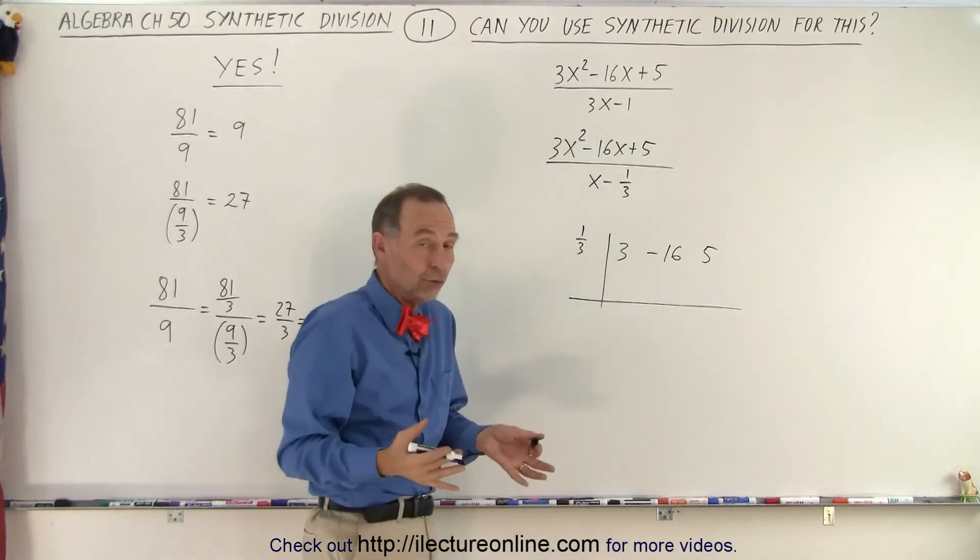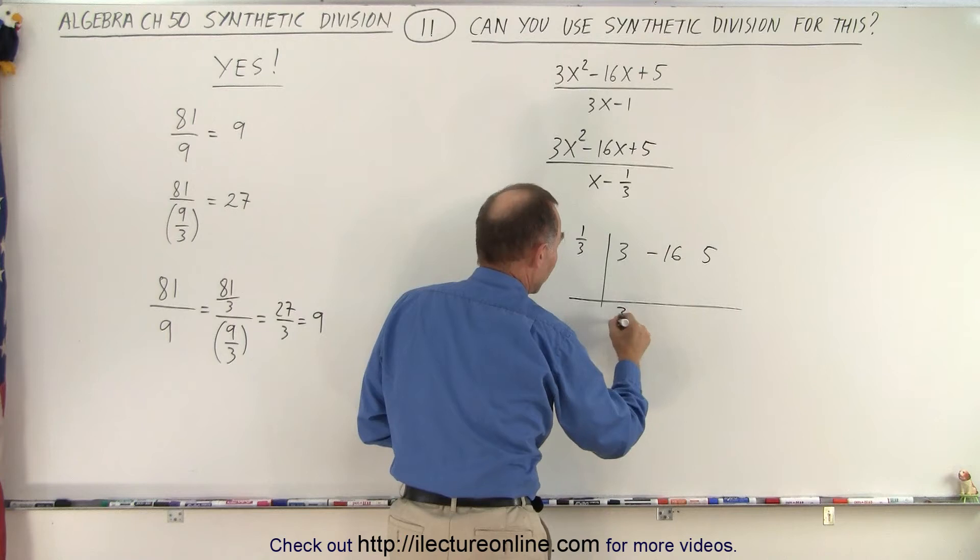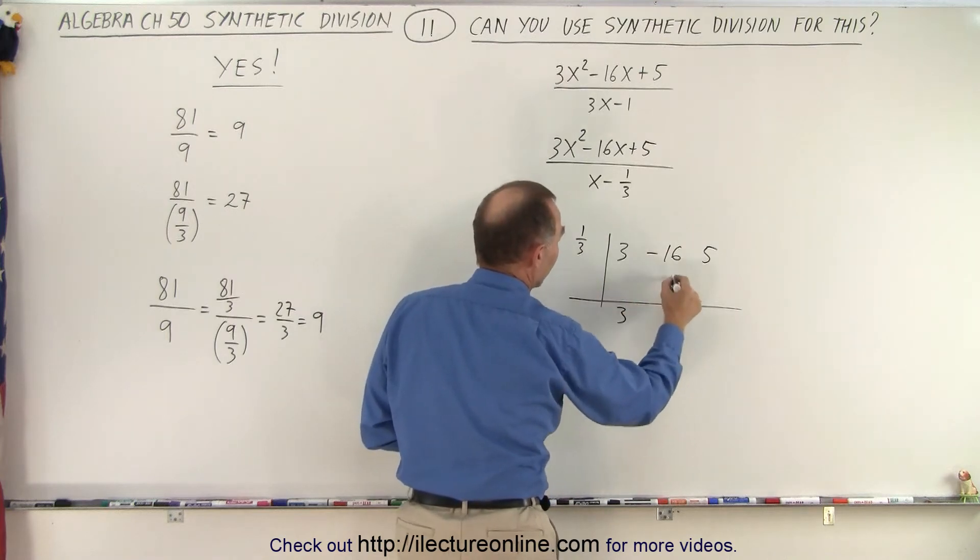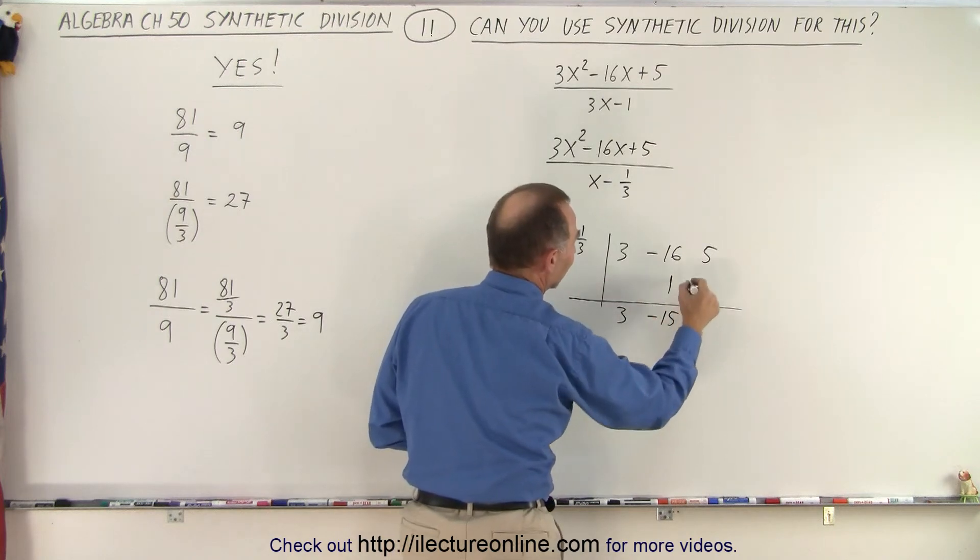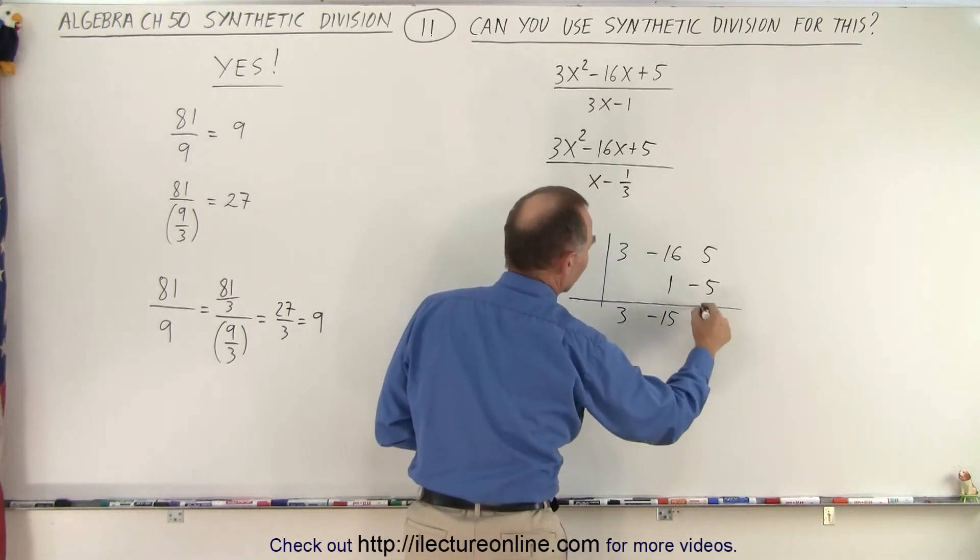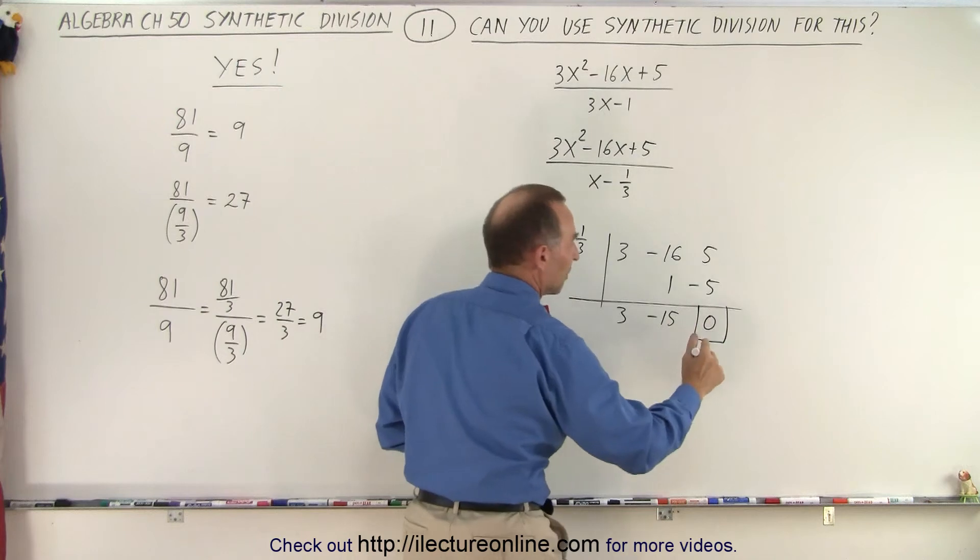And now I simply work it out like I always do. I bring down the first number, 1 third times 3, that's 1. Add them together, I get negative 15. 1 third times negative 15 is negative 5. Add it together, I get 0. There we go, we have 0 remainder.